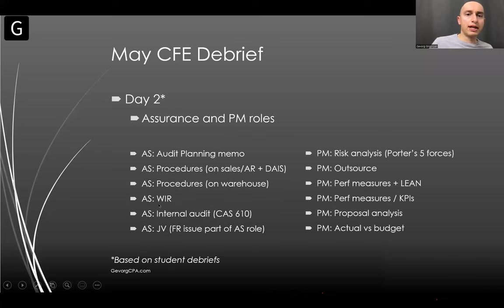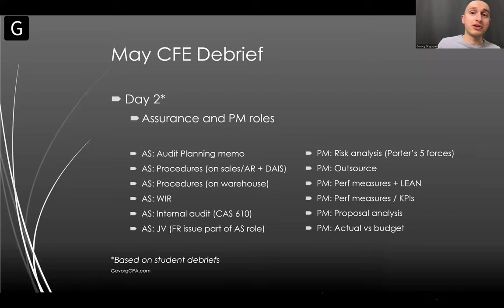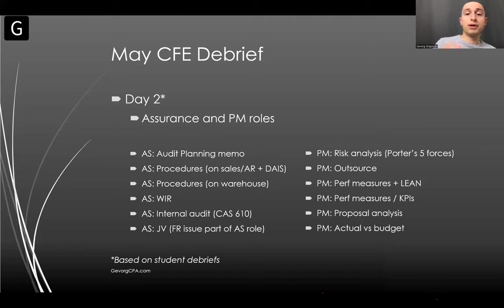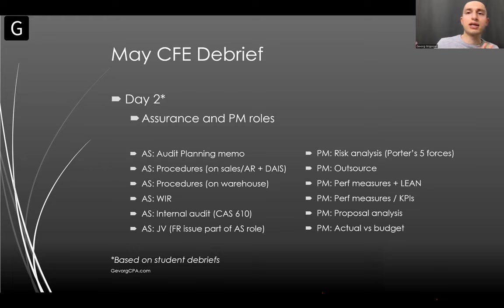Looking at the role areas, under assurance we had about six or seven AOs — very classical and repetitive. We had an audit planning memo, which comes up pretty much every year, procedures, WIR for control efficiencies, internal audit using CAS 610, and an FR question that was part of the role appendix on joint ventures. If you're writing assurance, be ready to get questions in your role area that aren't related to assurance — they sometimes put an FR question only assurance writers receive. The joint venture question was probably the most complex in the entire exam.